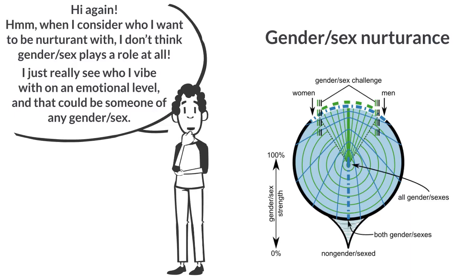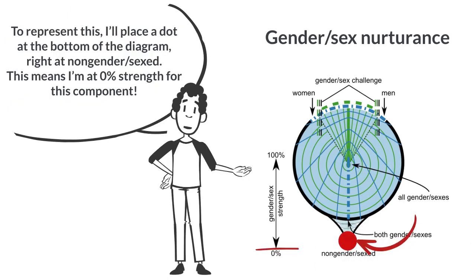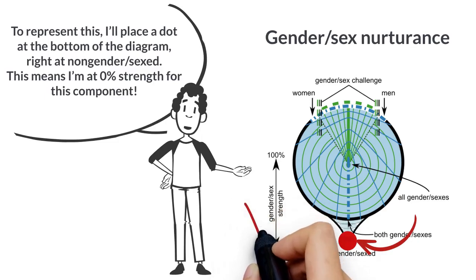When I consider who I want to be nurturant with, I don't think gender sex plays a role at all. I just really see who I vibe with on an emotional level, and that could be someone of any gender sex. To represent this, I'll place a dot at the bottom of the diagram, right at non-gendered sex. This means I'm at 0% strength for this component.